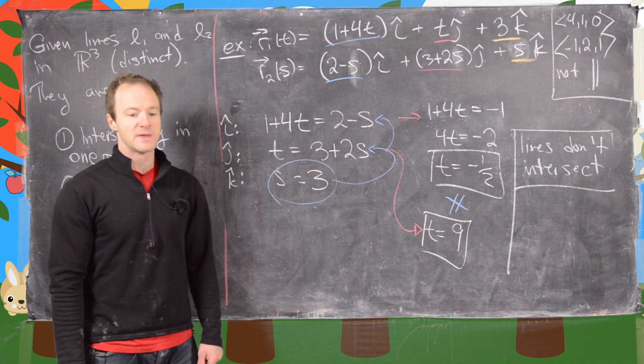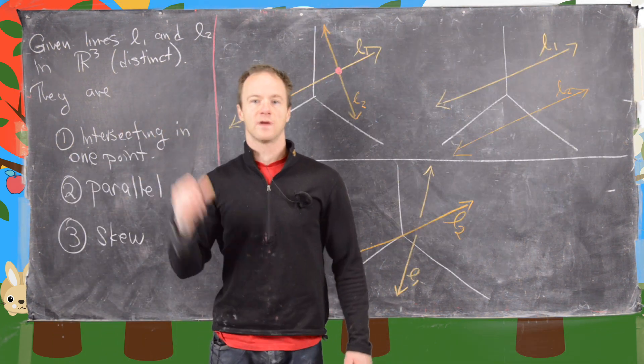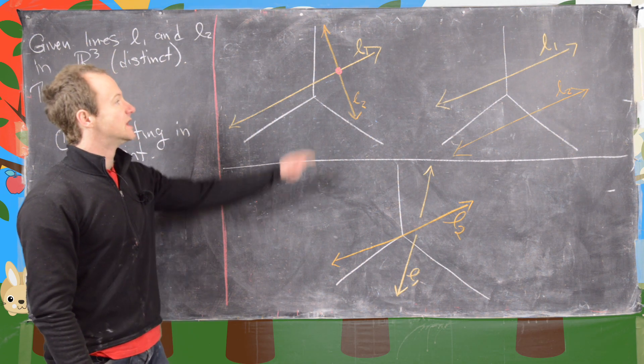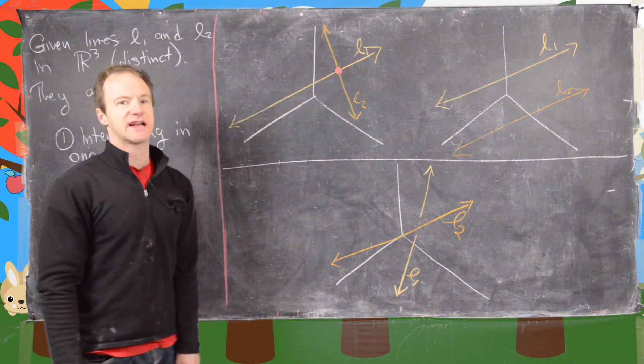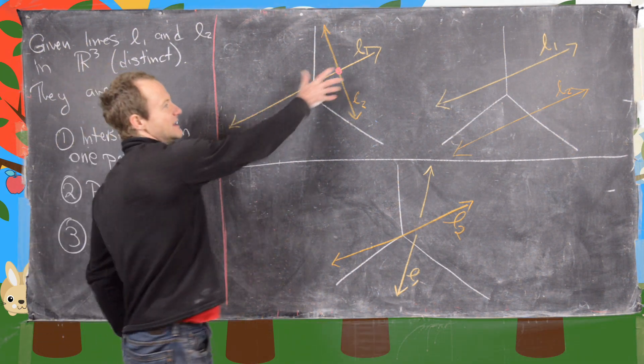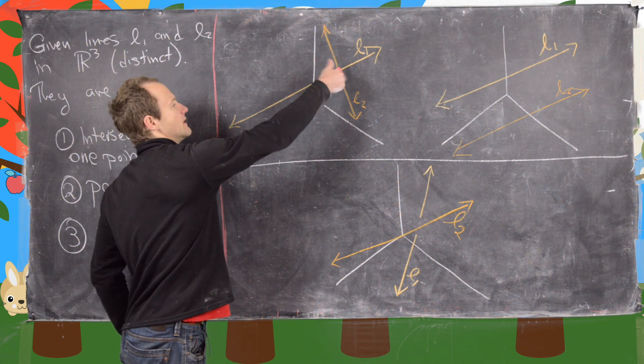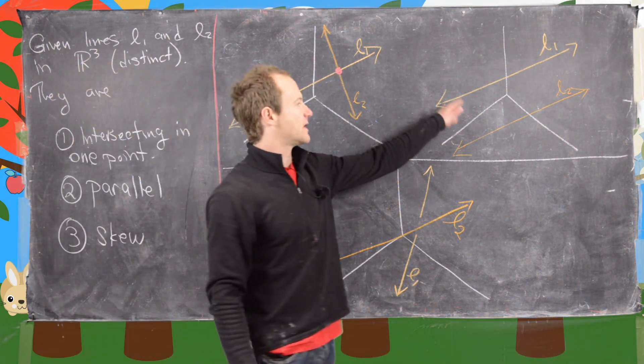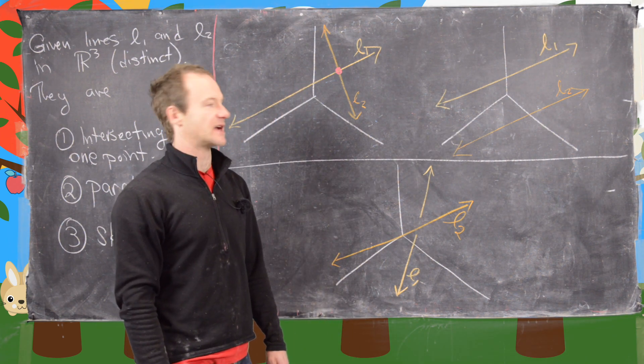I'm going to erase the board and then we're going to look at a sketch of these three possibilities. So here's a brief sketch of these three possibilities. Here we have line L1 and L2 intersecting in a single point. These two lines define a plane, and this plane is like R2, and they're obviously going to intersect in a single point there.